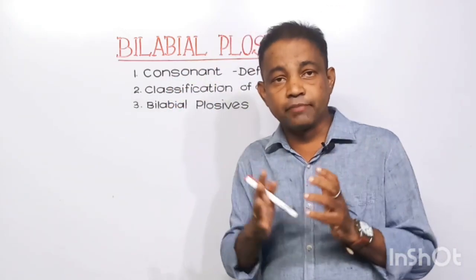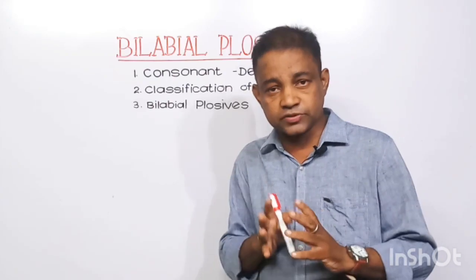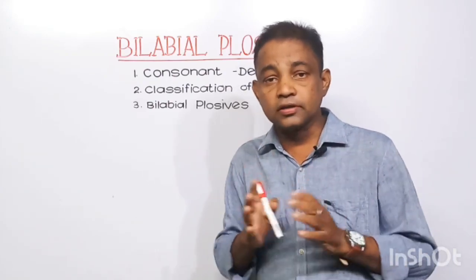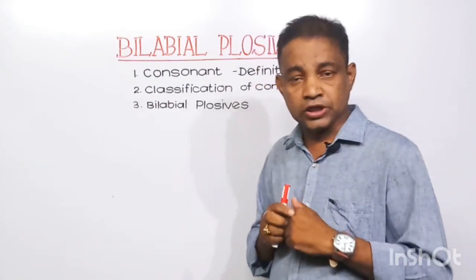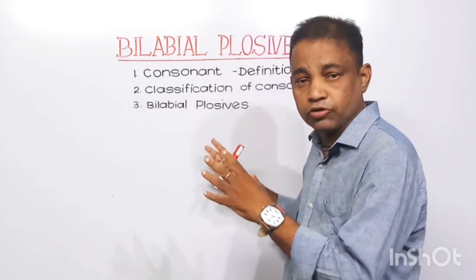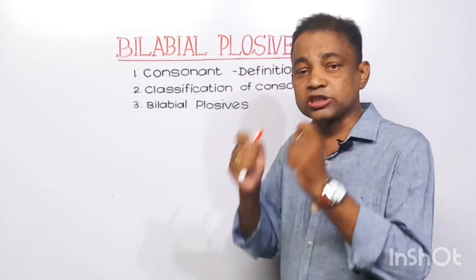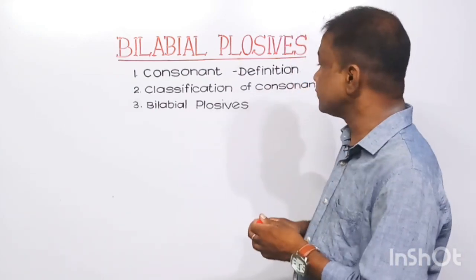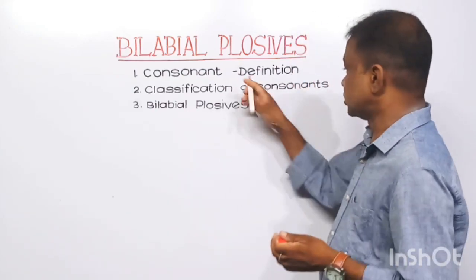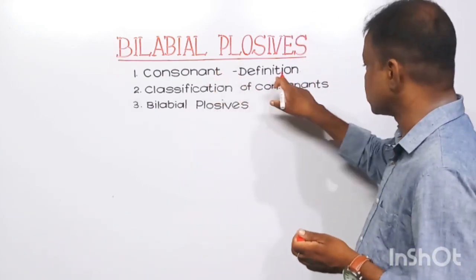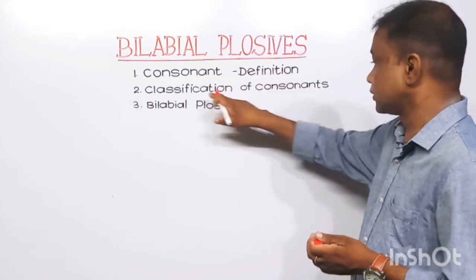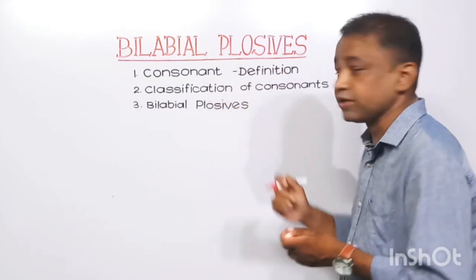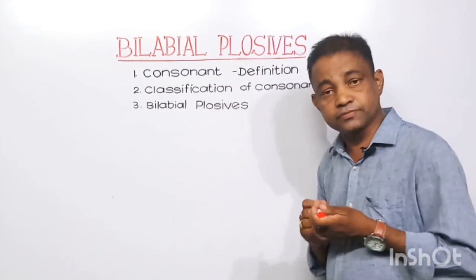What do you mean by bilabial plosives? Bilabial plosives are consonants. In this video, we will give importance to three important points: the definition of consonant, classification of consonants, and bilabial plosives.